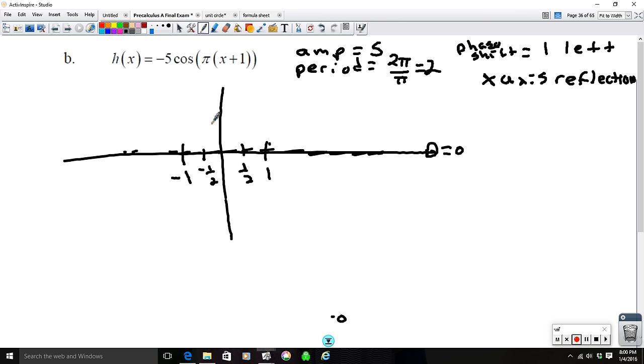If the amplitude is 5, this is going to go up to positive 5 and down to negative 5. And again, we know our cosine is starting at the minimum. Up and back down. So our graph is going to look like this. And this is 1 period of it. And you can obviously, if it's asking for more than 1 period, keep going in this direction or keep going in this direction.